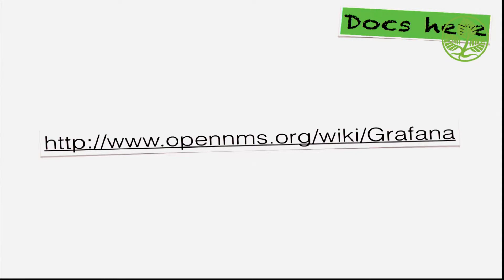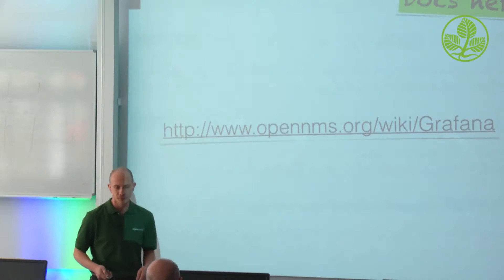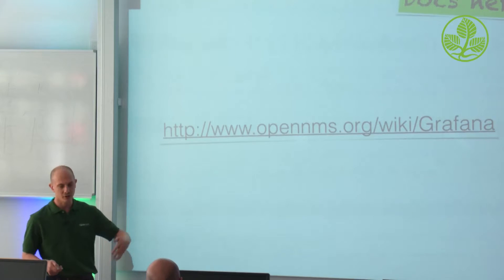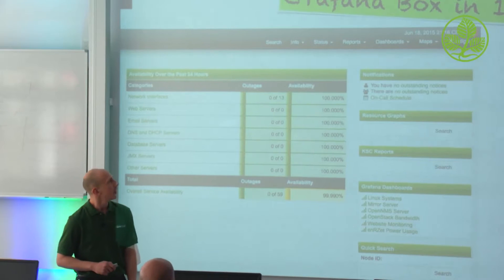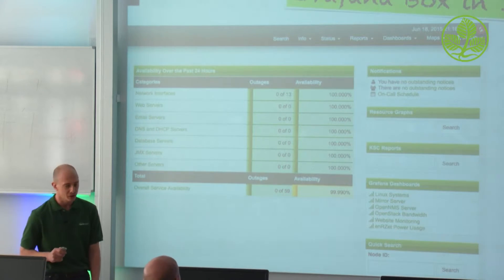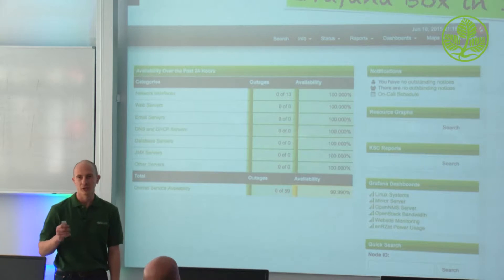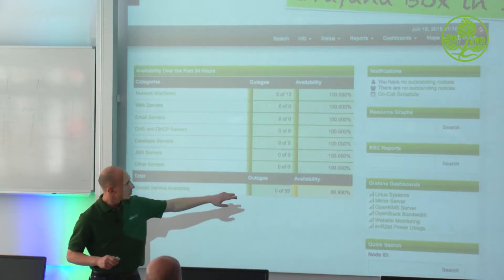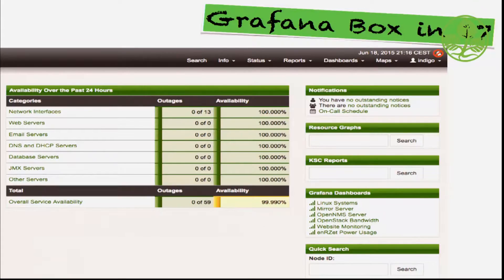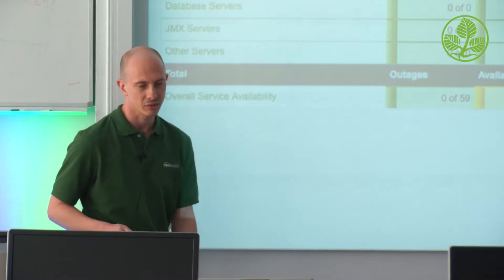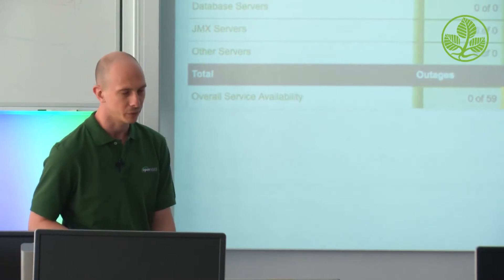You'll find the documentation in the wiki, where everything is completely explained — how to follow exactly this installation process. It's written as one big page: just do this, do this, and then you're basically done. We also introduced in OpenMS 17 a little feature created by a guy from the university which uses the REST API to query the dashboards available in Grafana, so you have access to dashboards directly from the web UI. You click a link and you get directly to the dashboard in Grafana.